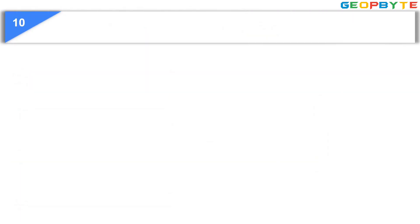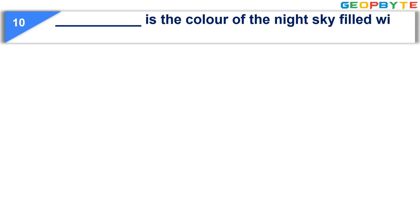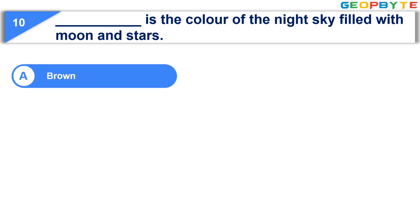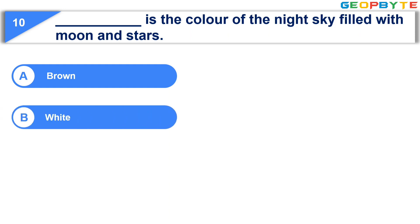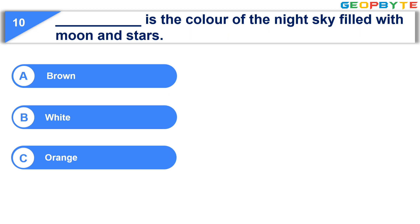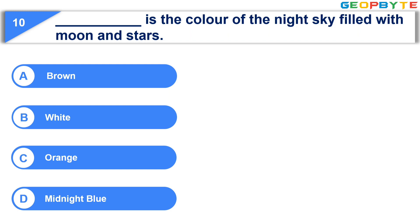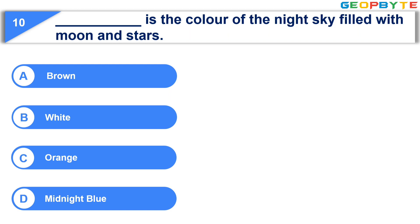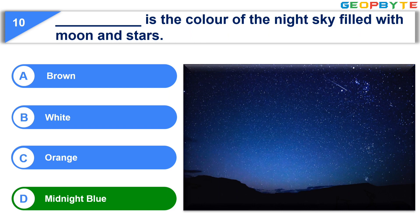The last question: Dash is the color of the night sky filled with moon and stars. Option A, brown. Option B, white. Option C, orange. Option D, midnight blue. Your time starts now. Your time is up and the correct answer is Option D, midnight blue.